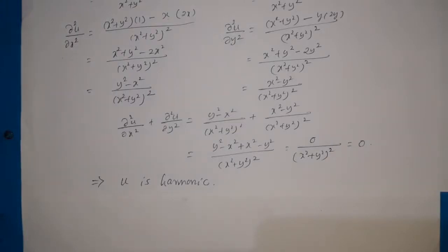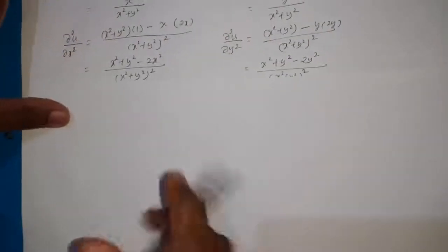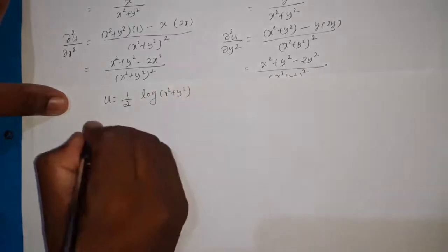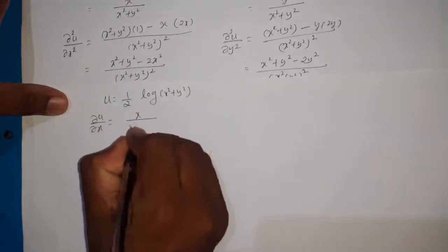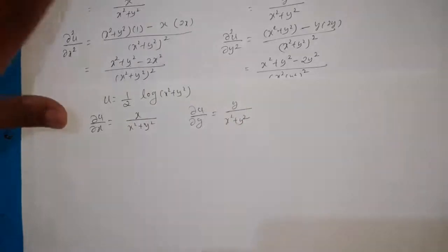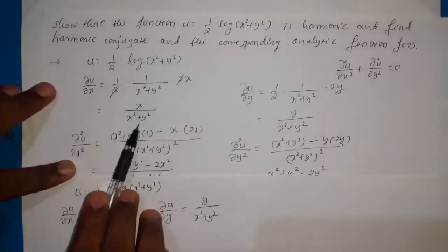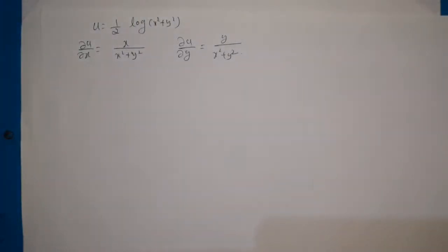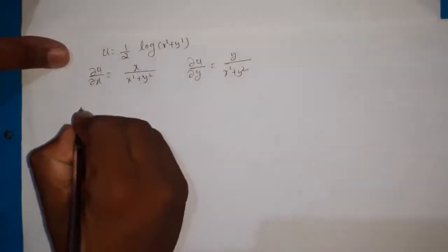Next we need to find the harmonic conjugate. Since u is given, we use the formula for v learned in the previous video. We have u = (1/2) log(x² + y²), ∂u/∂x = x/(x² + y²), and ∂u/∂y = y/(x² + y²). To find v, the formula is: v = ∫(−∂u/∂y) dx (treating y as constant) + ∫(∂u/∂x) dy (terms not containing x).